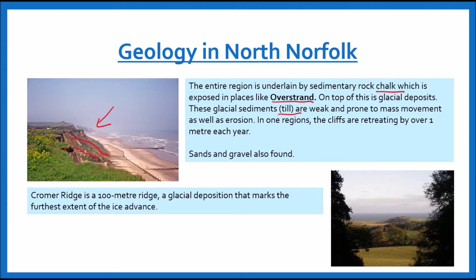In one of the regions the cliffs are actually retreating by over one metre each year. We've also got Cromer Ridge, which is a 100-metre ridge made by glacial deposition — that's actually the furthest extent that the ice reached and it's one of the highest points in the region.